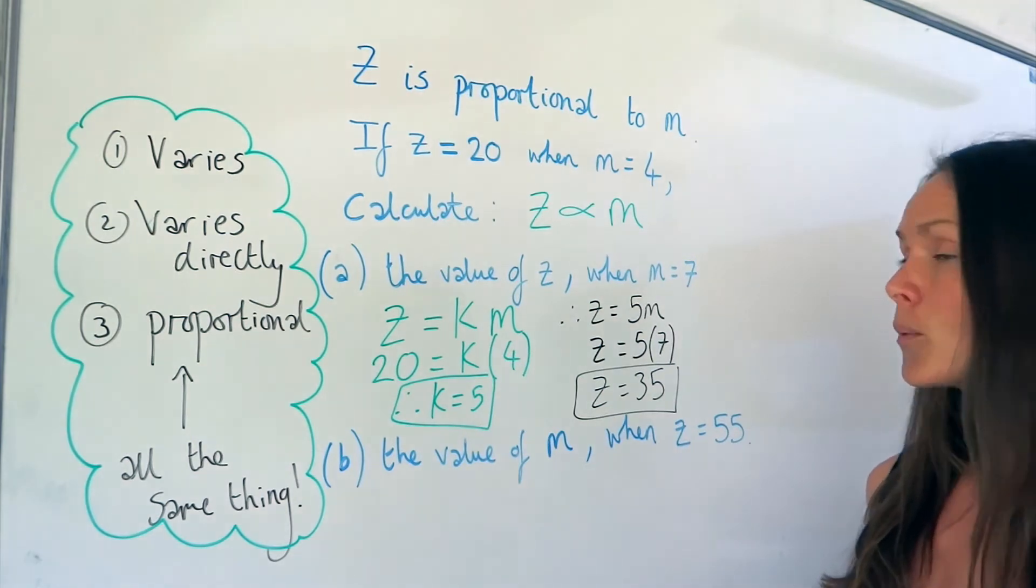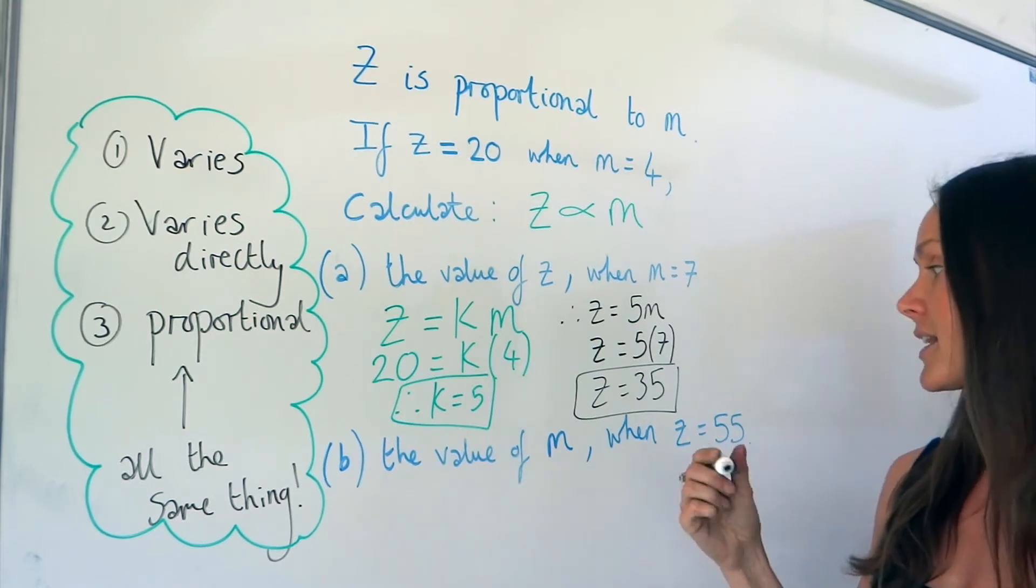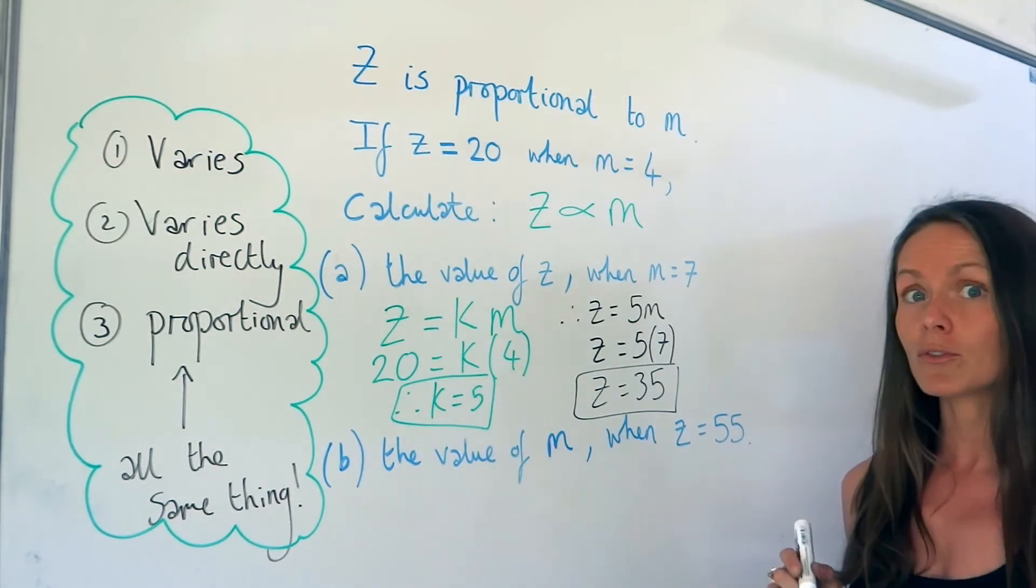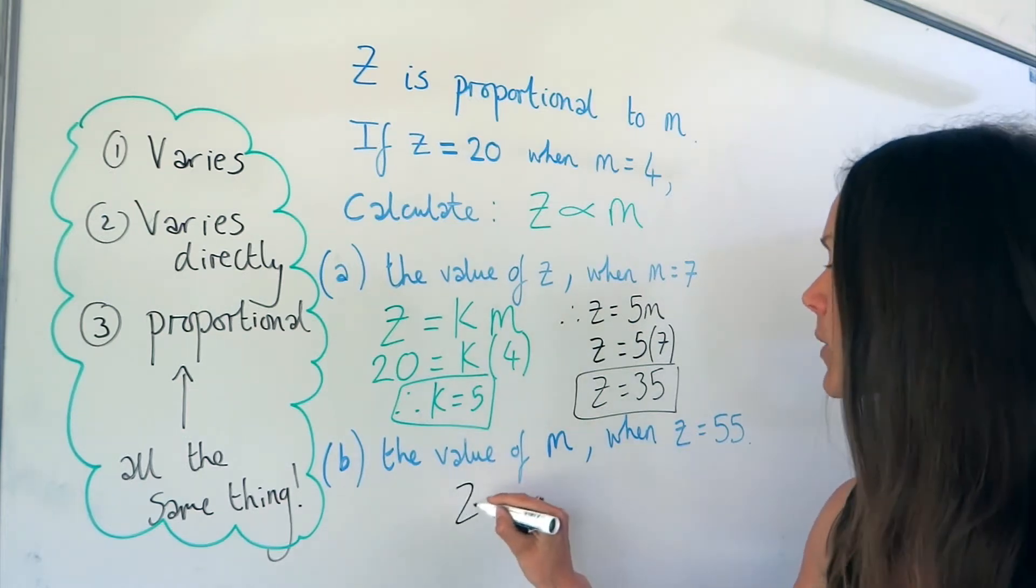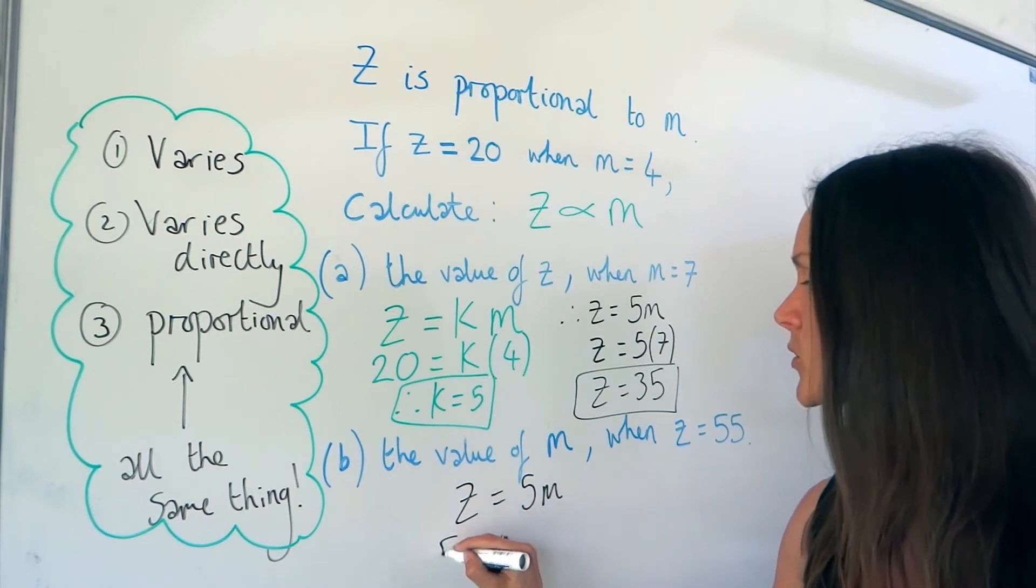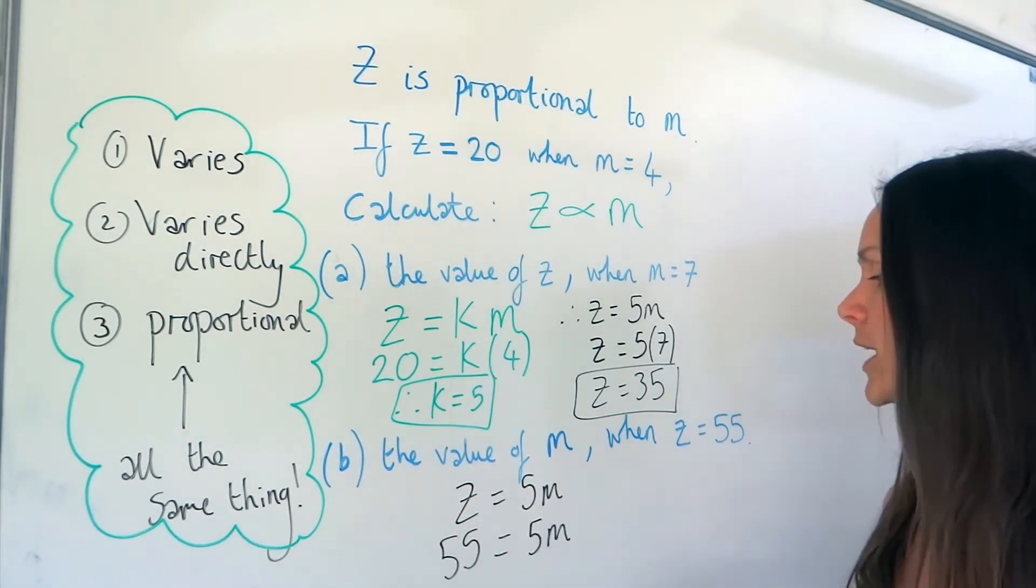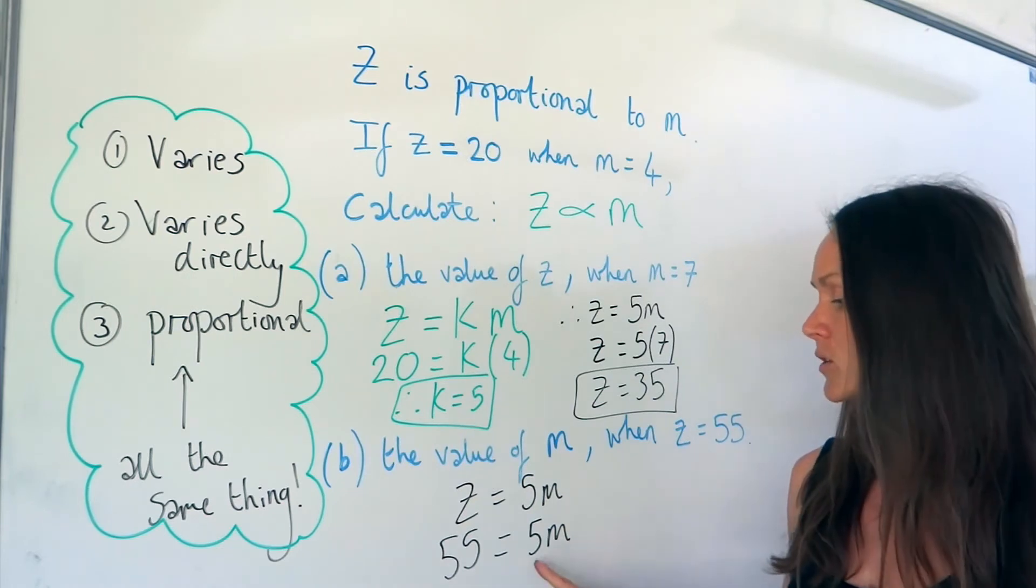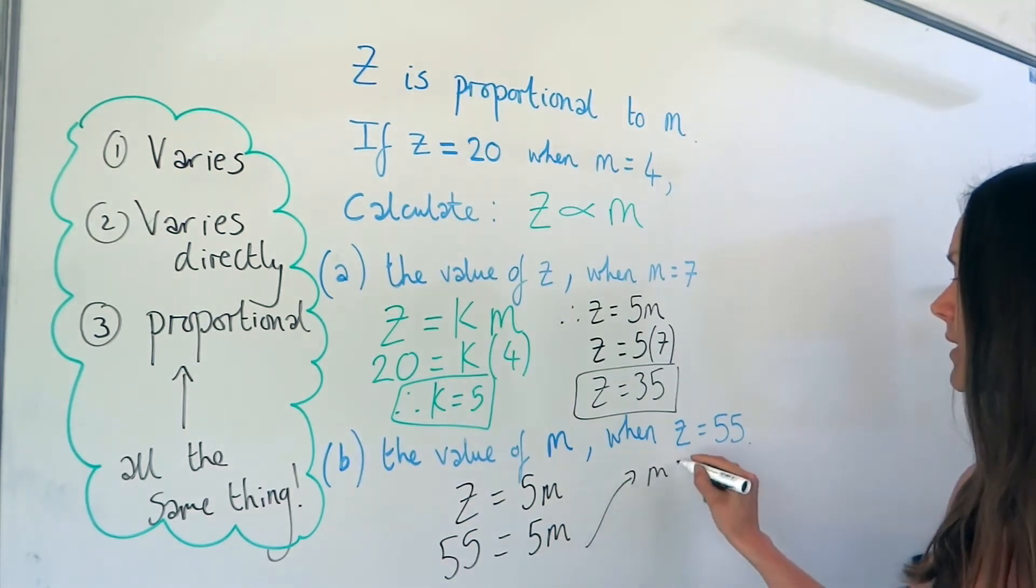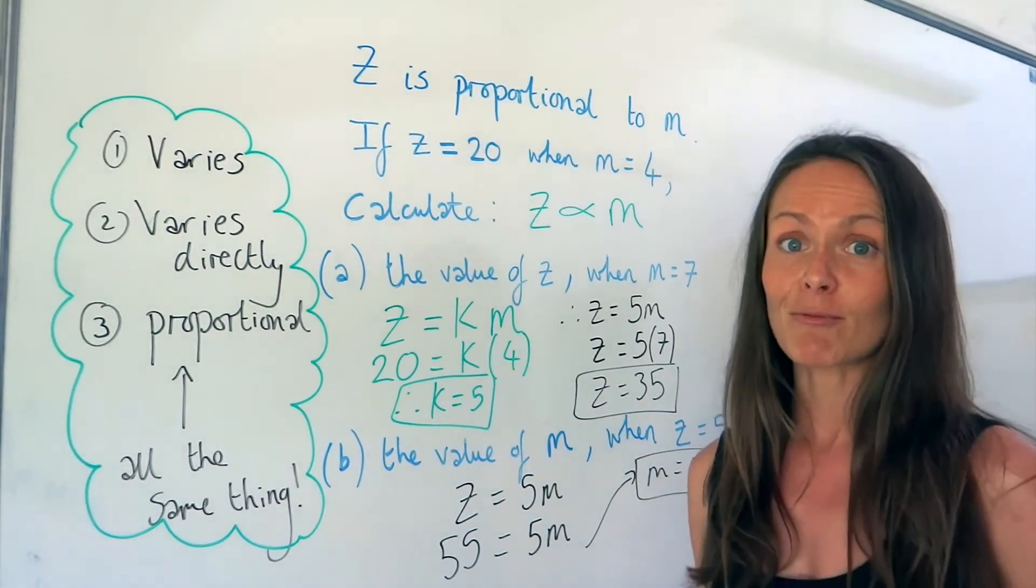Now, in part b, we're going to use that same equation, z equals 5m, except this time I need to change the value of z, and I'm going to change it to 55. So here's the equation. Change your value of z, so substitute in 55. And the value of m must be 11, because 5 times 11 gives me 55. So m equals 11. So I've solved parts a and b. Alright, on to the next one.